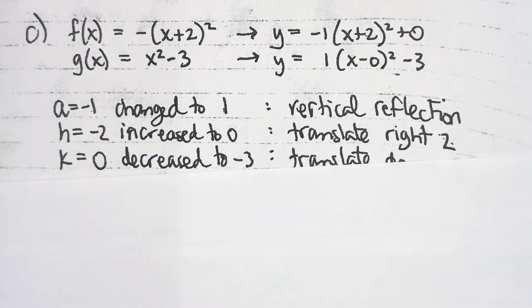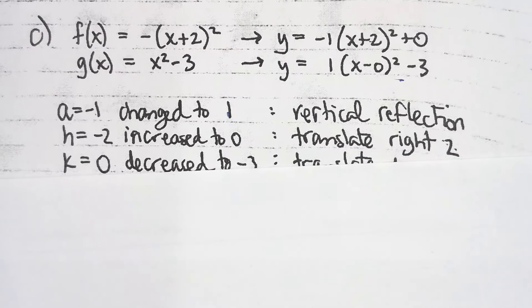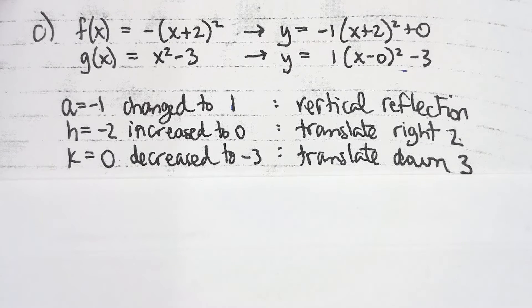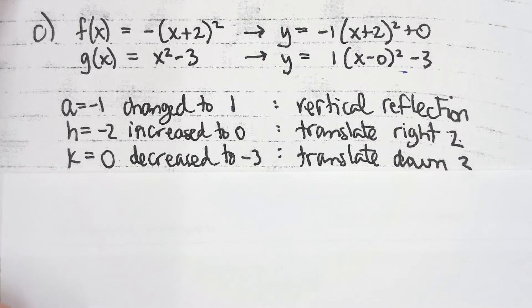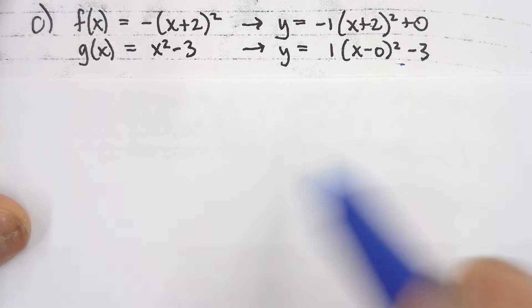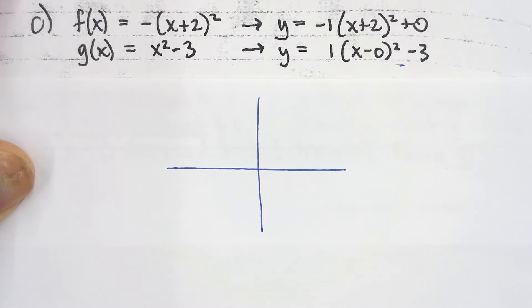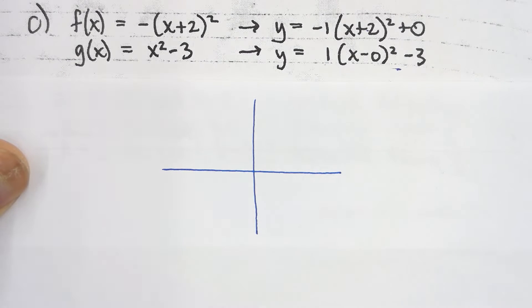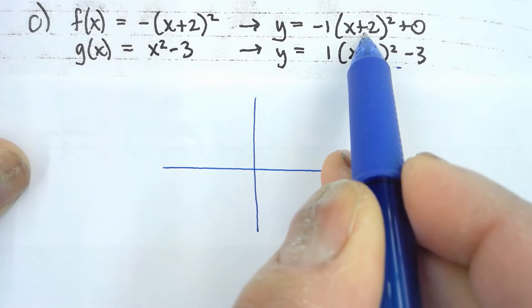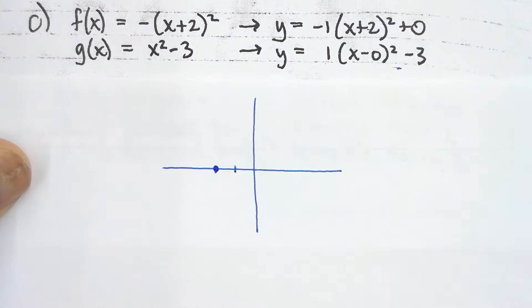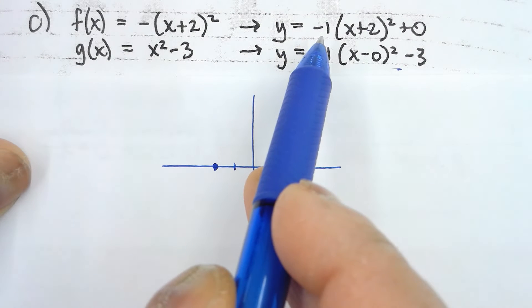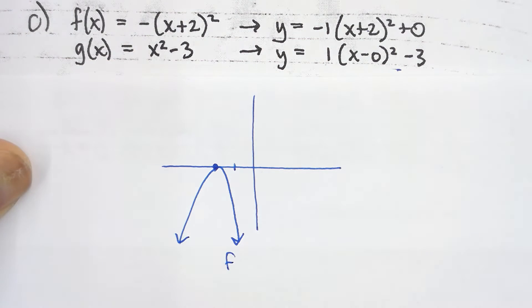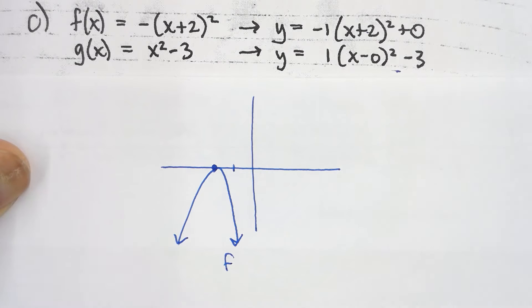We all know how to graph a parabola — get points from a table of values, connect the dots. But we also talked about how to sketch a parabola; it's really useful even if not strictly required. I'll quickly sketch parabolas f and g on the same grid to visualize it. From function f, the vertex is at negative two and zero. With a equal to negative one, it's normal curvature but opening downward.